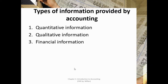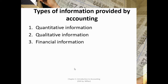Financial information is information expressed in money. Financial information is also quantitative information because monetary amounts are normally expressed in numbers. For example, how much were your sales for the year, or how much were your total expenses for the year — these are financial information.